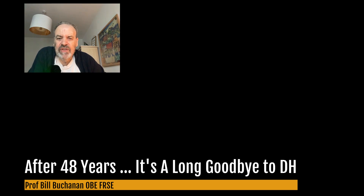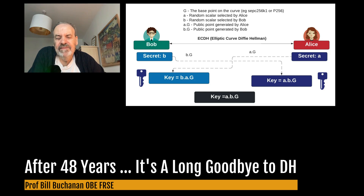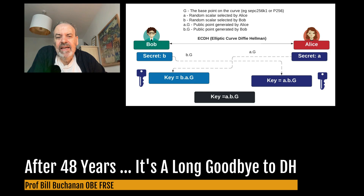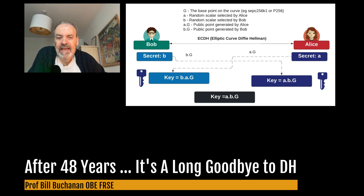These days, though, we tend not to use discrete log methods and use elliptic curve methods instead. We still generate a and b. Alice generates little a and then takes a base point on the elliptic curve, big G, and creates a new point on the curve: a·G, which is really G added to itself a times. Bob creates his secret b and then multiplies that by the base point to get b·G. They then share the public values, and Alice takes Bob's value b·G and multiplies it by a. Both Bob and Alice will then get ab·G, which is a times b times the base point G.